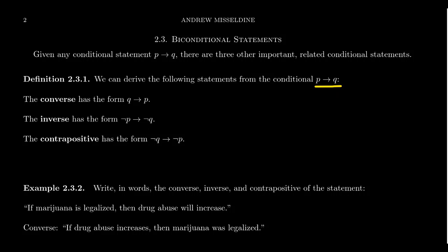The last one on this list of four is known as the contrapositive. This one reverses the direction and also negates things — it does both. The contrapositive combines what the converse and inverse each do separately. So if the original statement is P implies Q, then the contrapositive is: not Q implies not P.